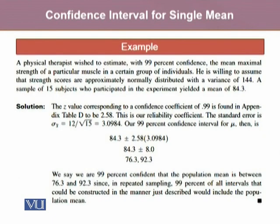Let's take an example. A physical therapist wished to estimate with 99% confidence the mean maximal strength of a particular muscle in a certain group of individuals. He is willing to assume that strength scores are approximately normally distributed with a variance of 144. A sample of 15 subjects yielded a mean of 84.3. The z value corresponding to the confidence coefficient of 0.99 is 2.58, which is our reliability coefficient.